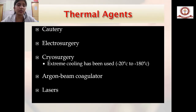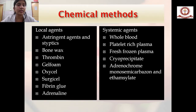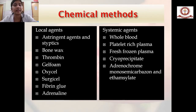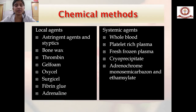Thermal agents include cautery, electrosurgery, cryosurgery, argon beam coagulator, and lasers. Chemical agents can be local or systemic. Local agents include astringents, bone wax, thrombin, gel foam, oxycel, surgicel, fibrin glue, and adrenaline. Systemic agents include whole blood, platelet, plasma, fresh frozen plasma, cryoprecipitate, and adrenochrome.